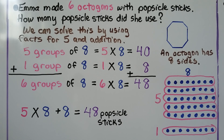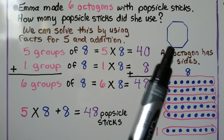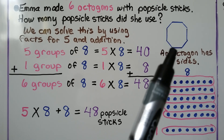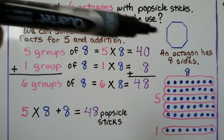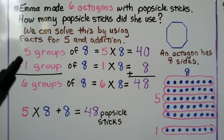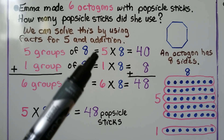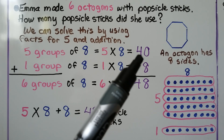Emma made 6 octagons with popsicle sticks. How many popsicle sticks did she use? An octagon has 8 sides, and if she made 6 of these, we can solve this by using facts for 5 and addition. Facts for 5 can be easier because it's easier to skip count by 5's. We had 6 groups of 8, so we start with 5 groups of 8. 5 times 8 is equal to 40.